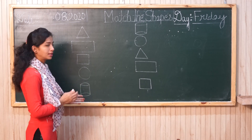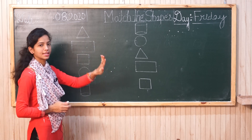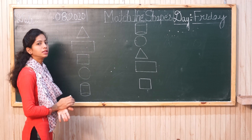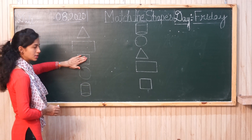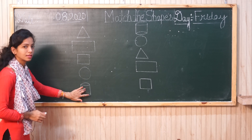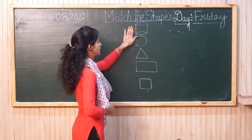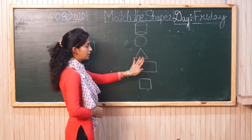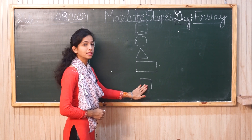Now we will match the same shapes with each other. You know which shape is this — triangle, rectangle, square, circle, and this shape is cylinder. Let's see which shape is this way: cylinder, circle, triangle, rectangle, and the last one is square.